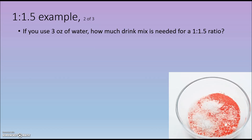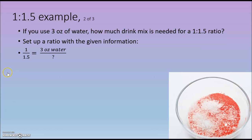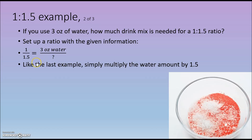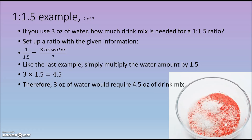What if we choose to use 3 ounces of water? How much drink mix is needed to maintain the 1 to 1 and a half ratio? Setting up equivalent fractions, we multiply the numerator by 3, and likewise multiply the denominator by 3. Multiplying 3 times 1.5 gives us 4.5 ounces of drink mix to maintain the ratio of 1 to 1 and a half.